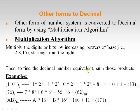Then to find the decimal equivalent, sum those products. For example, for a binary number, we multiply the bits with the source base 2 in increasing powers: 2^0 × 1 + 2^1 × 0 + 2^2 × 1 + 2^3 × 1. Sum all these values and you will get the result in decimal form.